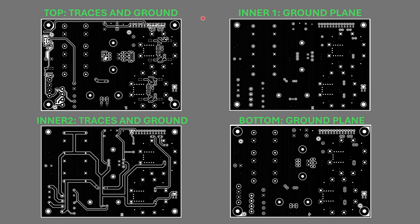Just to be absolutely clear on what I mean by ground on all layers, here's an example. This is the power supply from my DA converter. You see basically ground on all layers — there are two layers here which have a full ground plane: the inner one and bottom. That's usually the stack up I use if I have space. The top layer and inner two are used for traces, and everywhere where there are no traces, there is ground plane. That's what I mean by ground on all layers.